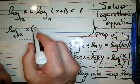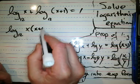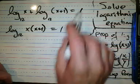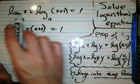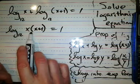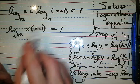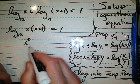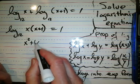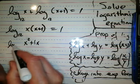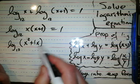Right? So we change the addition to be one multiplication. Now we know what that is. That's x squared plus 1x. Right? So it's really log base 12 of that.